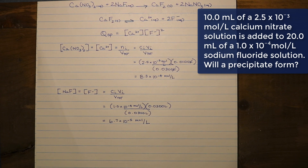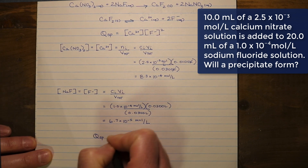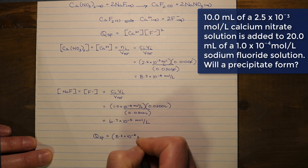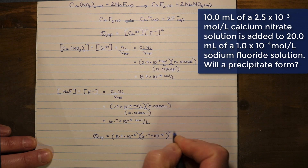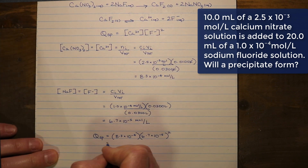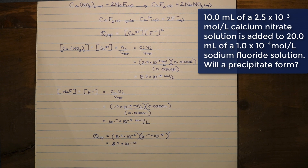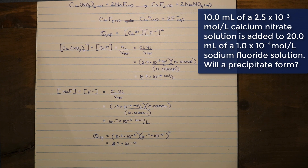Now we can take these values and put them into our QSP to compare it to our KSP. The QSP expression has the calcium ion concentration — 8.3×10⁻⁴ — multiplied by the fluoride ion concentration of 6.7×10⁻⁵, squared. In doing so, we arrive at a value of 3.7×10⁻¹². Note that we don't include units — we treat these equilibrium constants and reaction quotients as effectively dimensionless. That's an extremely low number, but KSP values for most solubilities are extremely low as well. We now need to look up the KSP to compare it to the QSP.